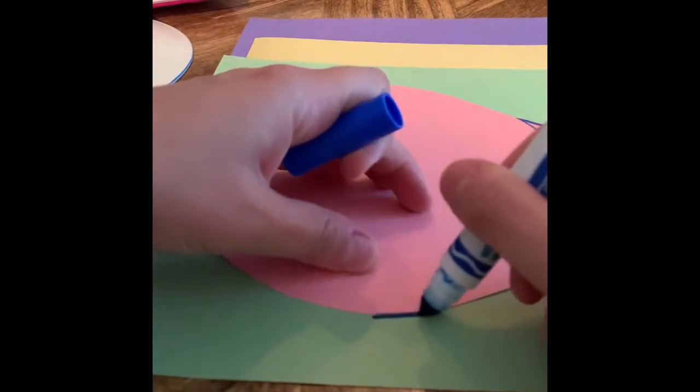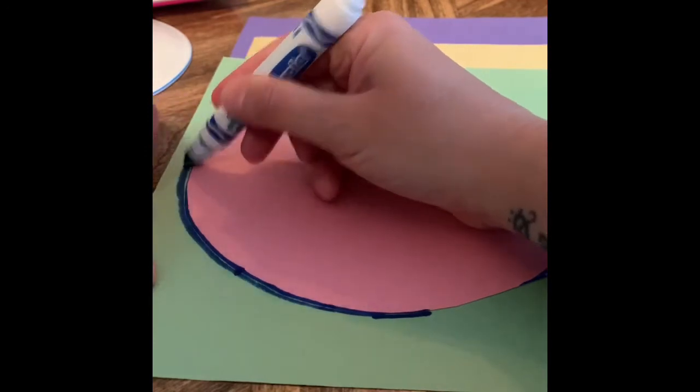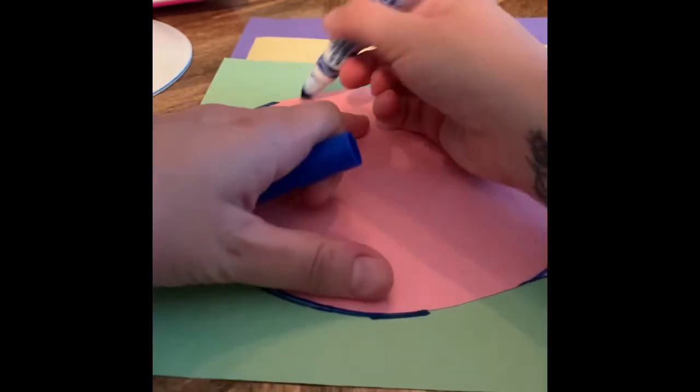Now that we have one shape cut out we'll place it on an additional sheet of paper and trace it. We're going to use our first shape as a template.